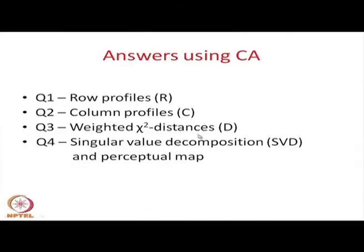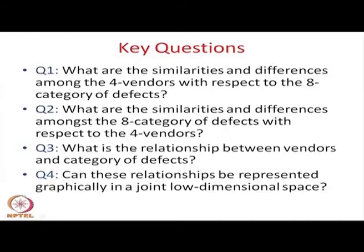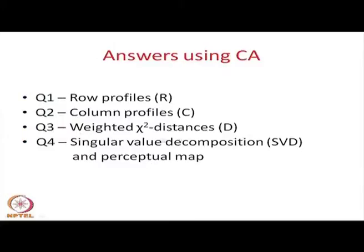There are four questions and four answers. Question three was: what is the relationship between vendors and category of defects? Question four is: can this relationship be represented graphically in a joint low-dimensional space? Question three is answered through chi-square distance, but question four requires advanced matrix manipulation known as singular value decomposition.